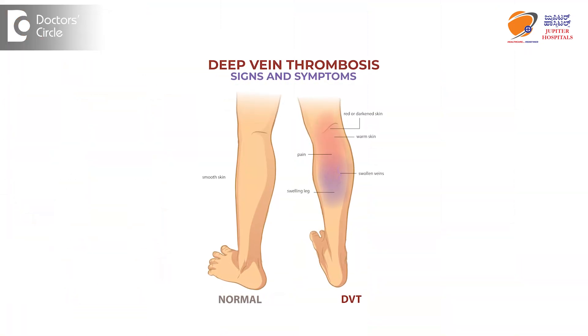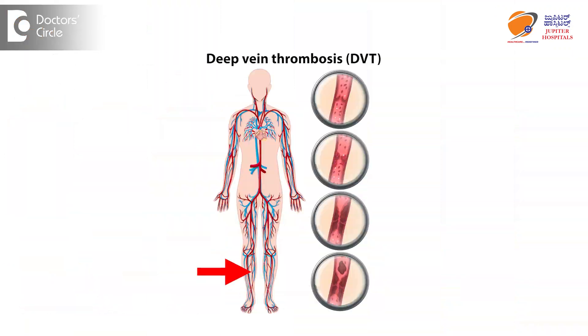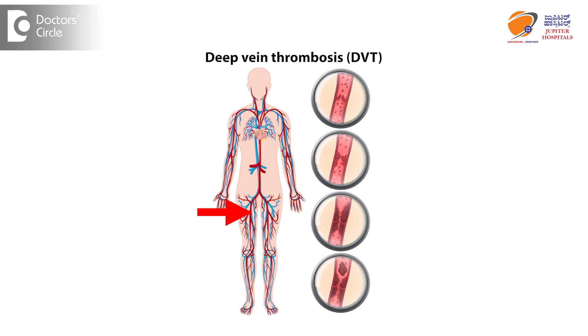DVT normally happens in the lower limbs. The deep veins are the ones which are present in the middle of the muscles and they carry blood, collecting blood from the superficial veins and then carry blood to the heart.